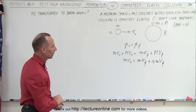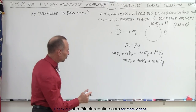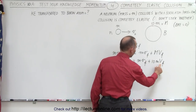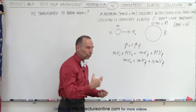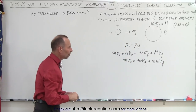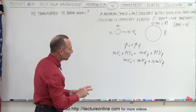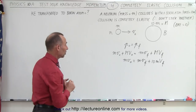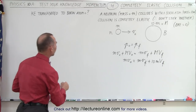That doesn't help us solve the problem because we have two unknowns — a V_final for the neutron and a V_final for the boron — and we don't know the relationship between the two. So we need a second equation: the energy conservation equation to solve them simultaneously.